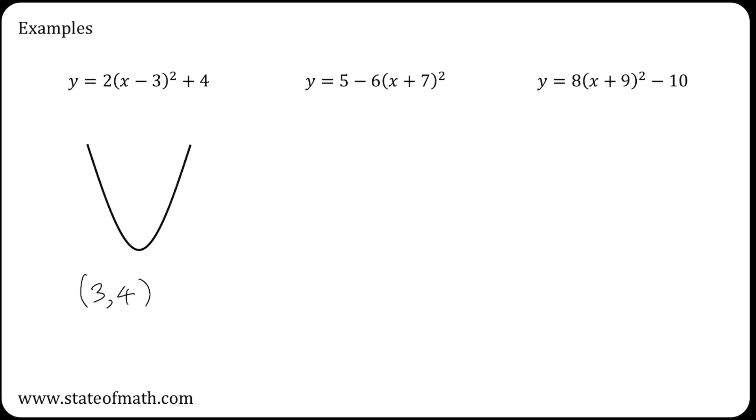For the second example, the coefficient of the bracket is minus 6. That's a negative value, which means that I have a maximum value. Setting the bracket equal to 0 will give me an x value of minus 7. Once this gets a value of 0, you'll be left with a 5, which is the y coordinate of my turning point.